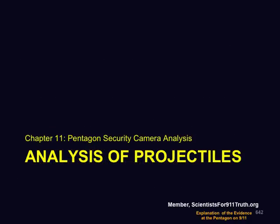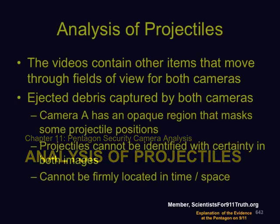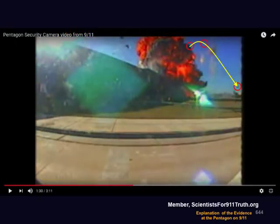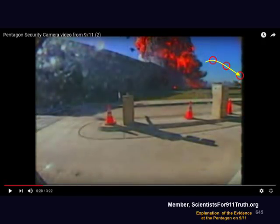We also have an analysis of the motion of projectiles seen in the two videos. This is not useful for making quantitative measurements, but it does verify that there's an offset in the capture times for the frames of the two videos. Some of the projectile positions are masked for one of the cameras. The projectiles can't be identified with certainty in both images, and we can't locate them spatially with certainty. But at minimum, they do show the two videos are different, which supports their authenticity. Here we see a projectile seen in camera A over three frames, and here is what may be the same projectile captured in camera B in a somewhat different location.